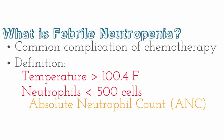Then we divide by 100. Also, if you have absolute numbers, you take your absolute neutrophils plus your absolute bands and multiply that sum by 1000. That will give you your ANC, or absolute neutrophil count. Now, once you have defined someone as having febrile neutropenia, you need to proceed on to the management of febrile neutropenia.